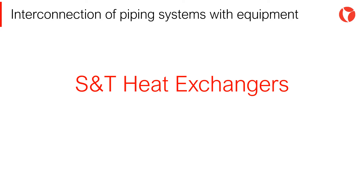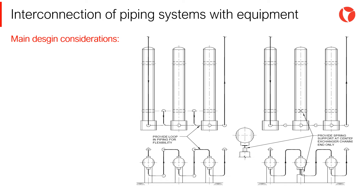In a shell and tube heat exchanger, there is a thermal exchange between two fluids. The interconnection of pipes must be carried out respecting the process requirements, and in turn, minimizing the loads transmitting by the pipes to the exchanger's nozzles. The main design considerations for shell and tube heat exchangers are the following.